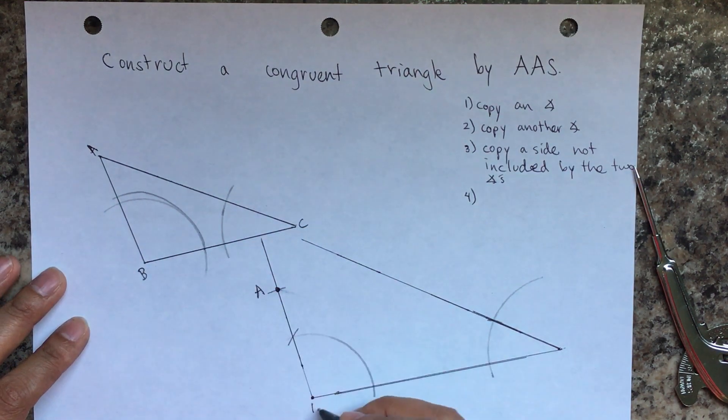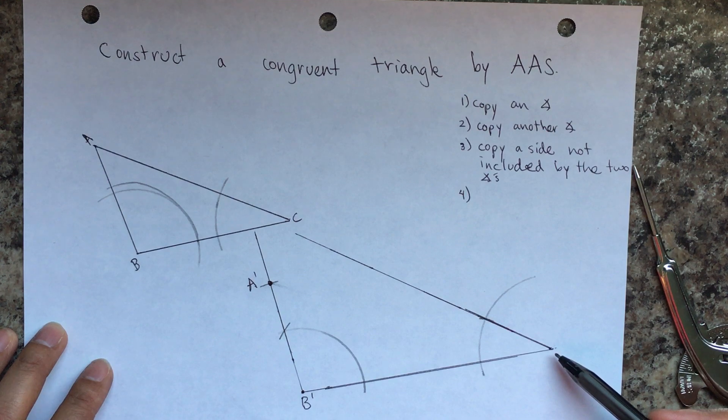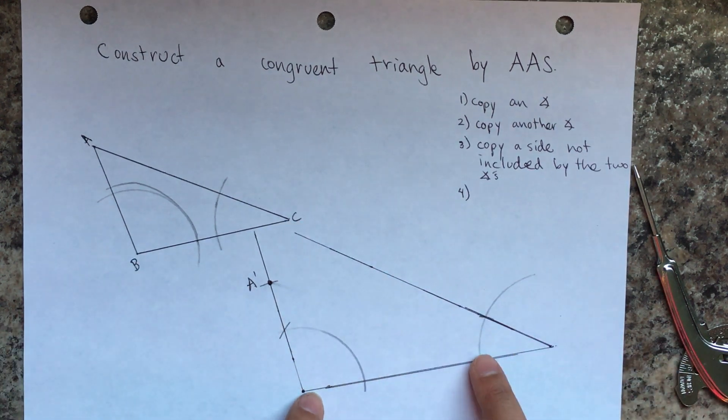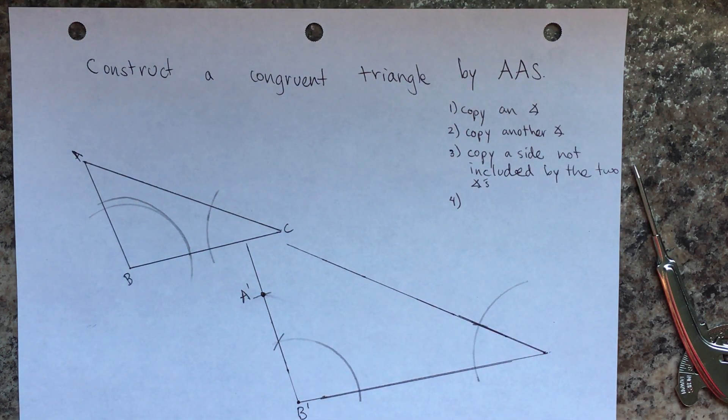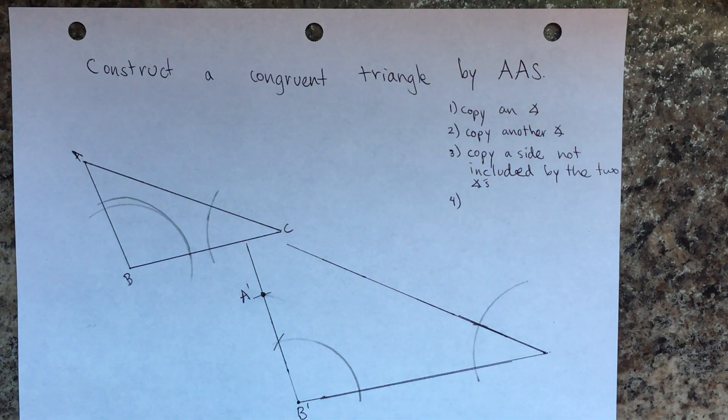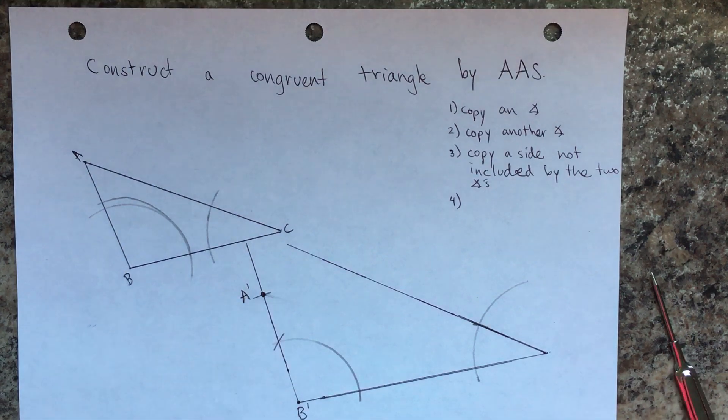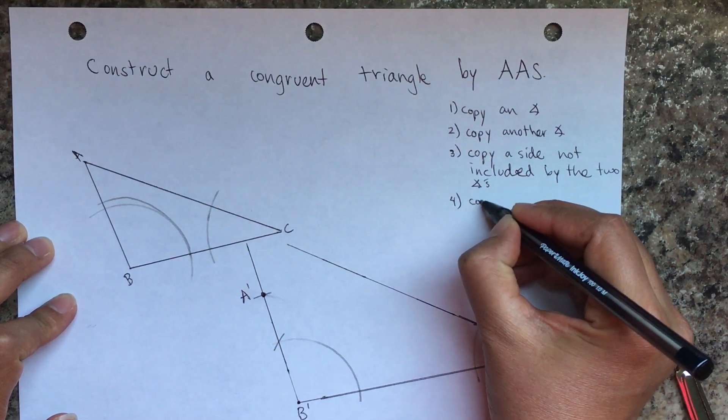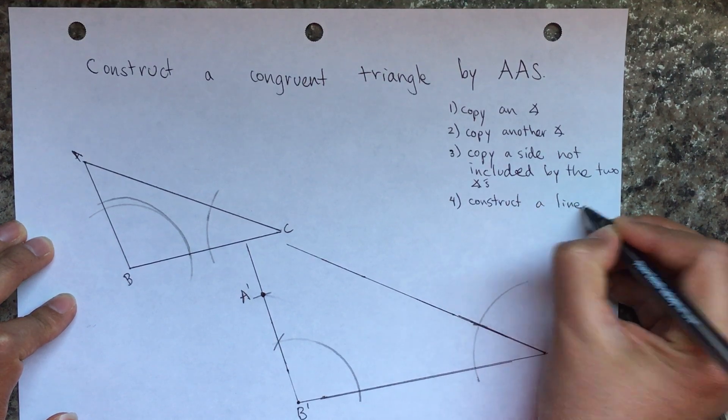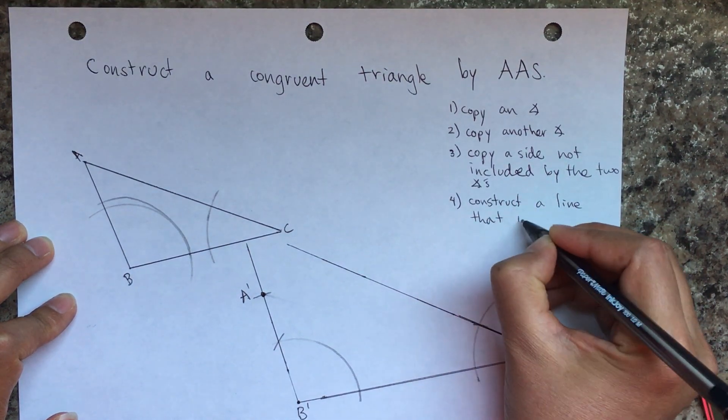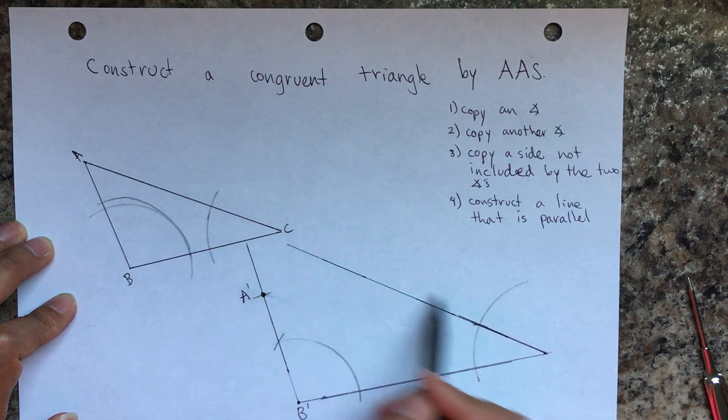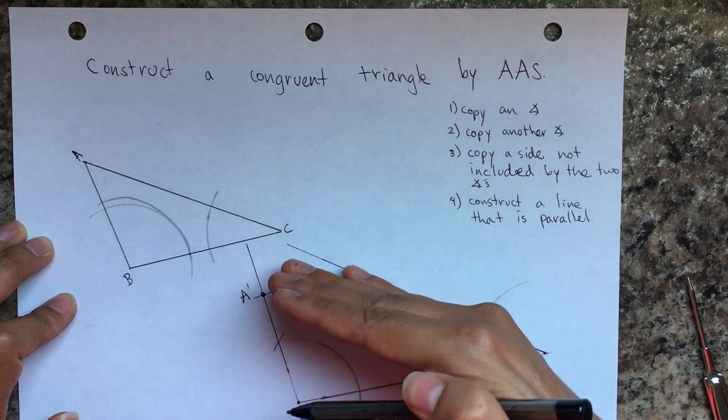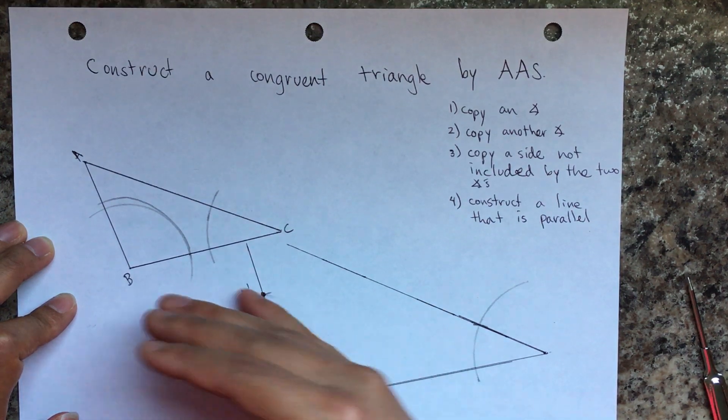Hmm. So this is A prime B prime, however this is not C prime. C prime, if you notice, is smaller, but we cannot measure that because it says copy by angle angle side. So if you recall from previous lessons, we learned about parallel lines, and that's the next step. You're going to construct a line that is parallel, parallel to this other side, but that goes through point A. So it's going to be parallel and it's going to go through point A, okay? A parallel line through point A.